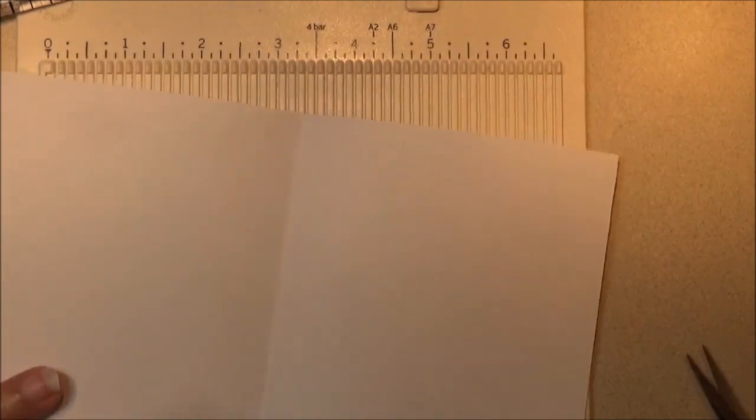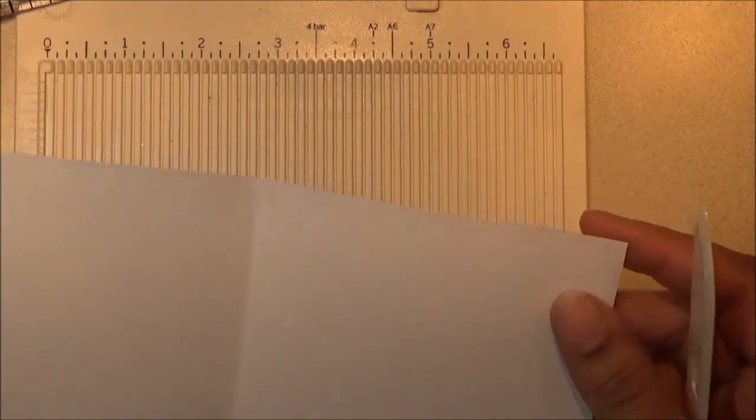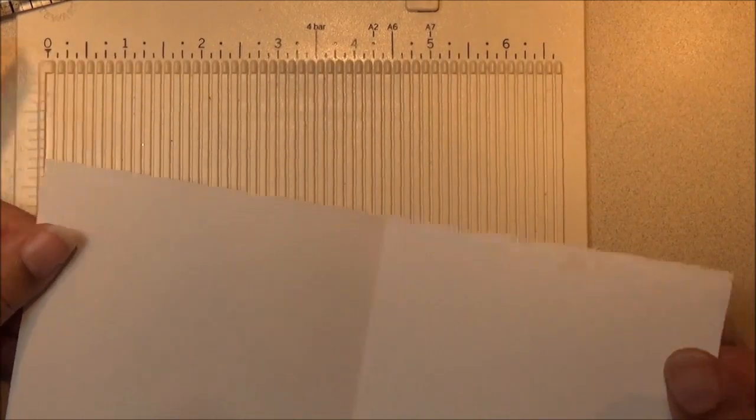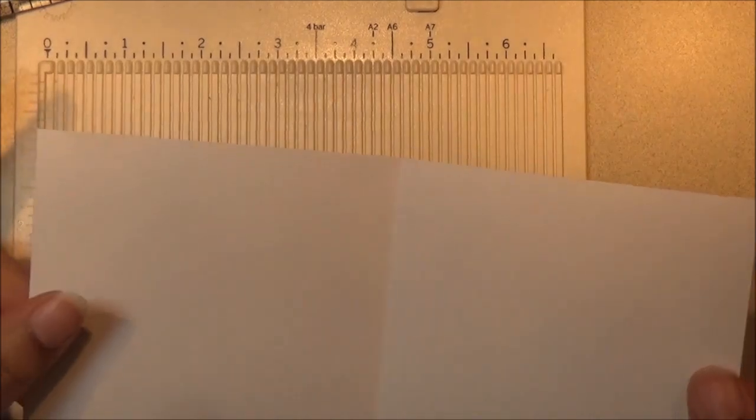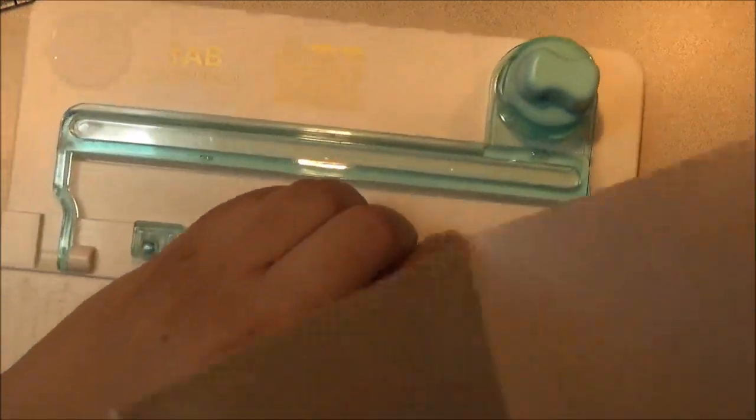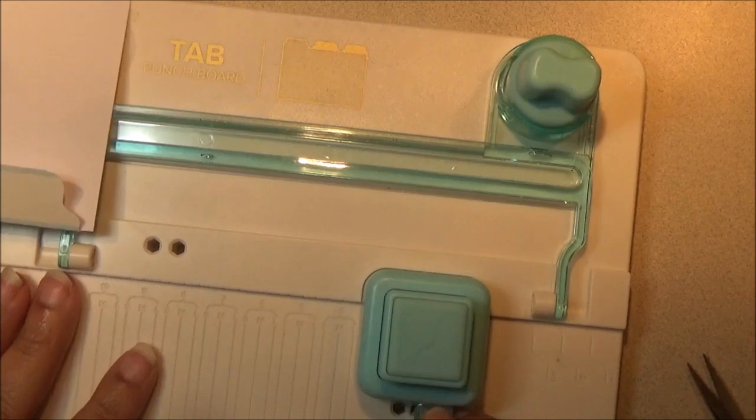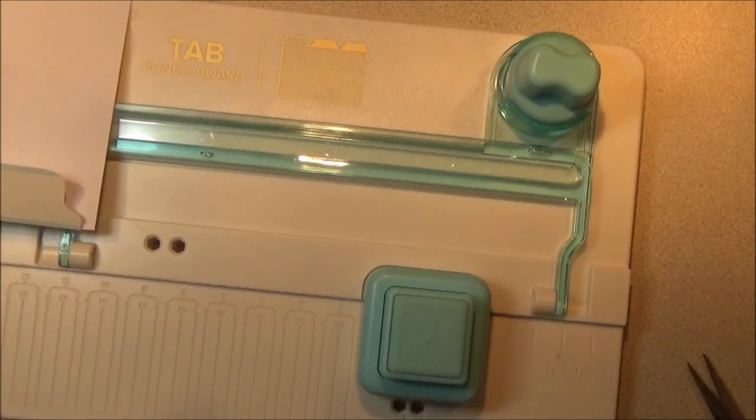Now you want to fold this up like so. Now if you want to round off the corners, if you don't like the pointed edges, which I'm looking at it now, I think I did round the corners. So I'm going to bring back my tab punch board and round those corners. So it does have a corner rounder. So I'm going to put this in here to round the corners.